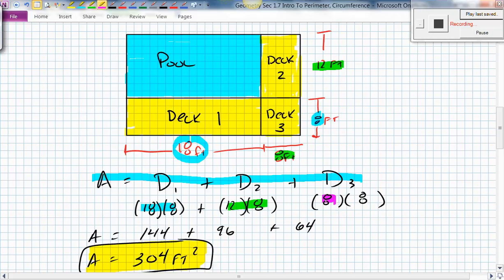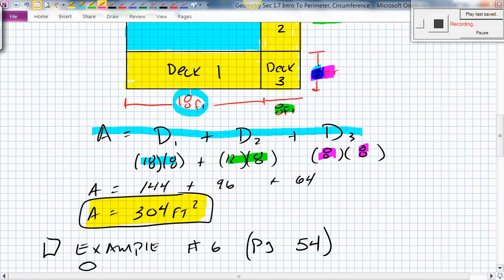And then the area in deck number three was 8 by 8. And that's just this one and that one, 8 by 8. I crossed it out on that one. So when you put all that together, you get an answer of 304 feet squared, add them all together.